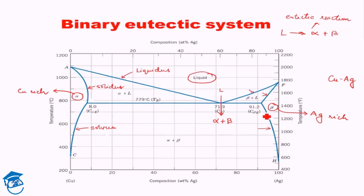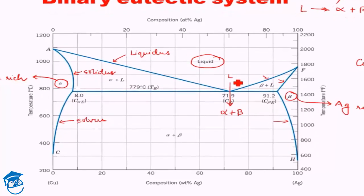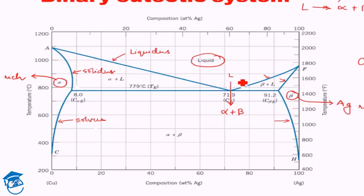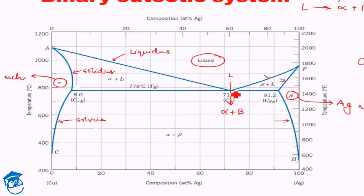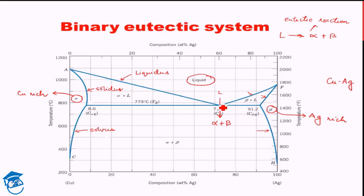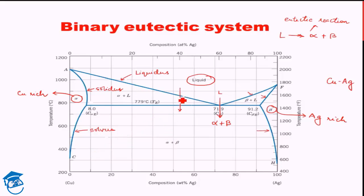Let us examine several different compositions to see what is happening. The eutectic reaction — conversion of liquid to two solids simultaneously — takes place only at one specific point. At any other location, this reaction won't take place. If we are at a different composition, liquid converts to liquid plus alpha first, and the second solid forms only after the temperature reaches a lower region. Similarly, going the other way, beta forms but alpha is found only after a lower temperature is reached.